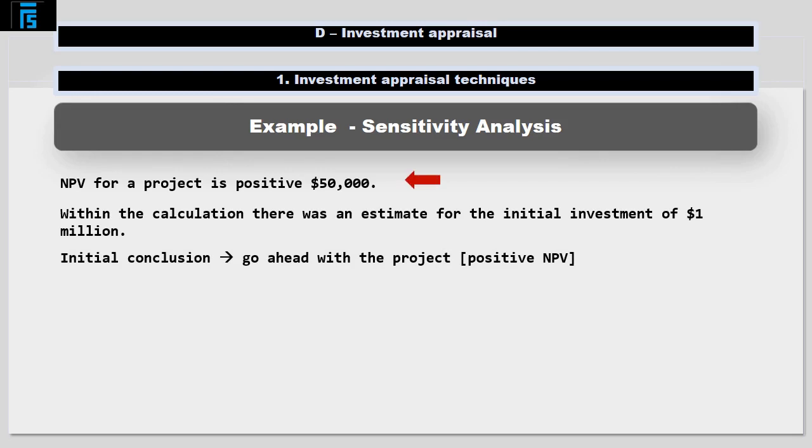In fact, we would be happy to go ahead with the project provided the NPV is not zero or negative. For every $1 increase in the cost of the initial investment, the NPV will fall by $1.